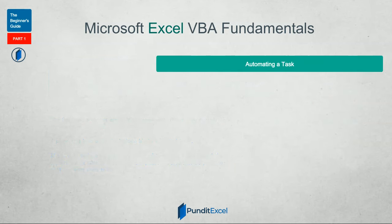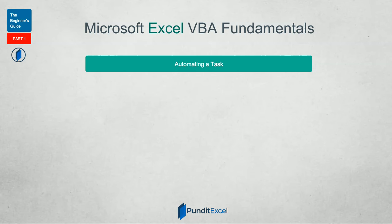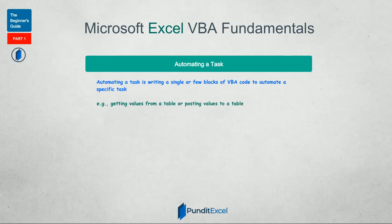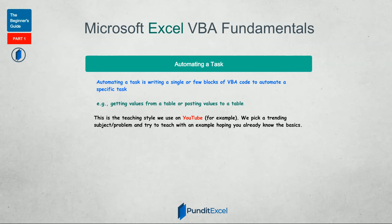Let me explain what automating a task is and how it differs from building a program. Automating a task is writing a VBA code that sends commands to your application to execute a specific task. This can be writing a procedure to update a table, getting values from a table, or any task you can think of. It is simple and involves just a couple or a few lines of code. This is what we often teach on YouTube and social platforms.